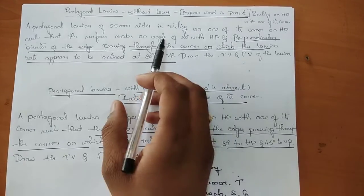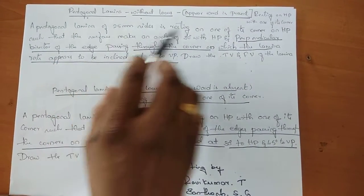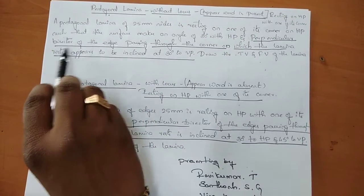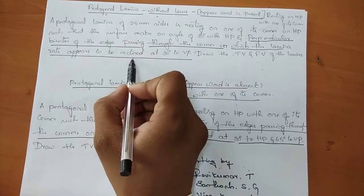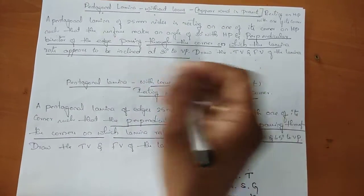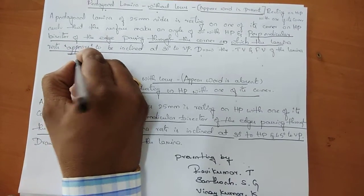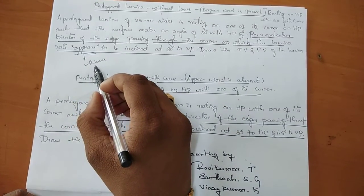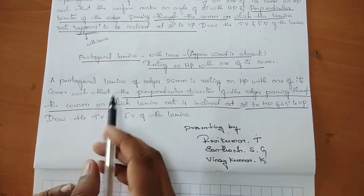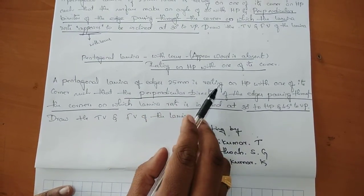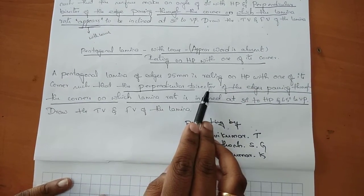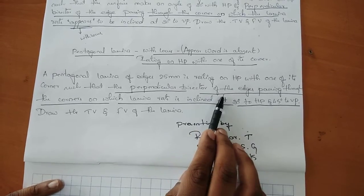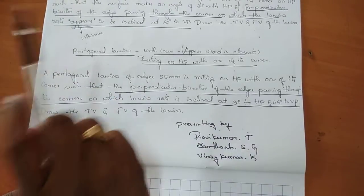When the word 'appear' is present in the problem, it is called a 'without locus' problem. First problem: a pentagonal lamina of 25 mm sides is resting on one of its corners on HP such that the surface makes an angle of 30 degrees with HP, and the perpendicular bisector of the edge passing through the corner appears to be inclined at 30 degrees to VP. Since 'appear' is present, it is a without-locus problem. In the second problem, the word 'appear' is absent, so it is a with-locus problem.